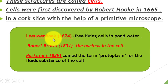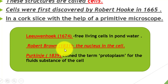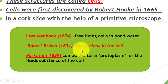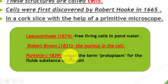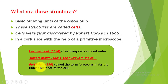Here is a discovery timeline: Antoine van Leeuwenhoek in 1674 discovered free-living cells in pond water. Robert Brown discovered the nucleus, one of the cell organelles, in 1831. In 1839, the term 'protoplasm' was coined for the fluid substance of the cell. These names and dates are very important — the discovery series spans from 1665 to 1839, covering various organelles.